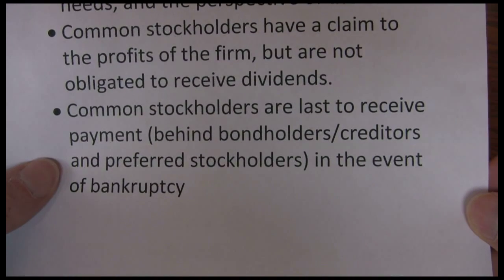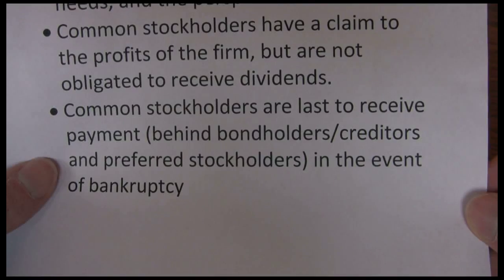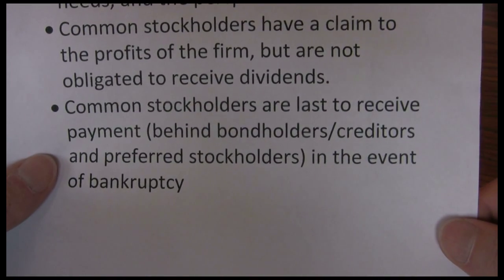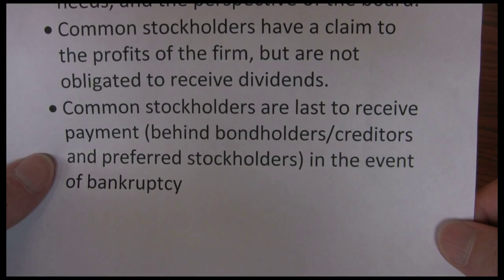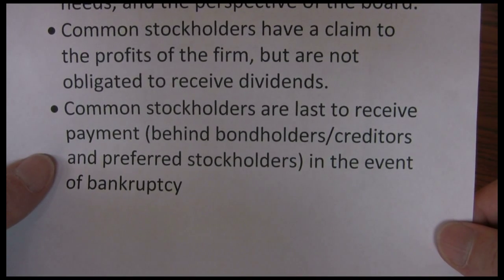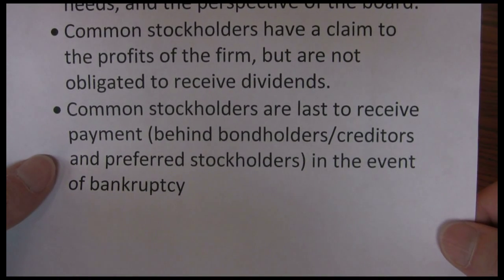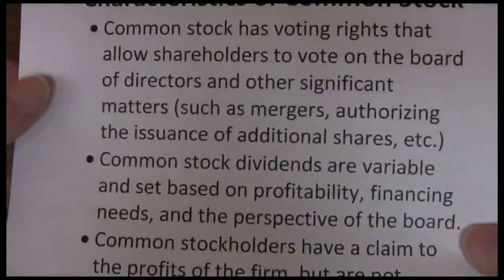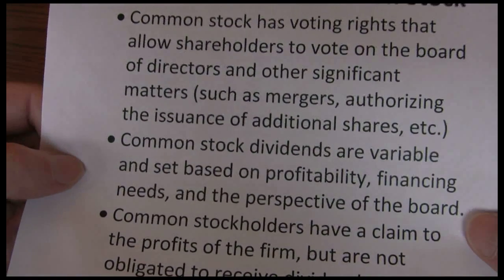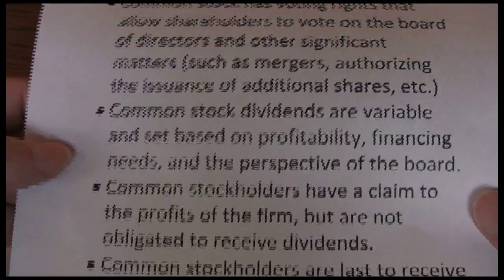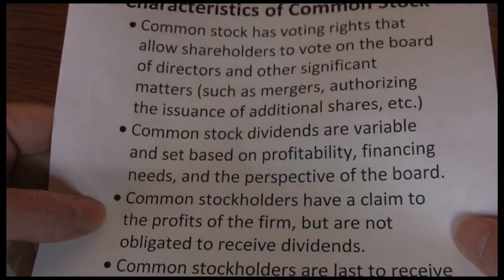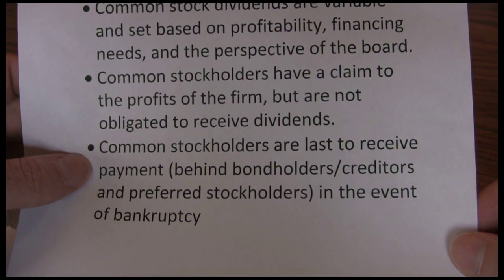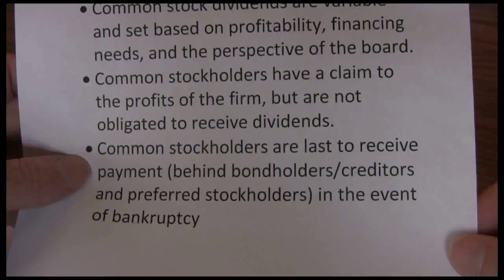Common stockholders are the last to receive payment behind bondholders or other creditors, and preferred stockholders in the event of bankruptcy. If the company goes bankrupt, most likely my stock is going to become worthless — there's typically nothing left over to distribute. It also means my dividends are last in line. So common stock gives me ownership rights, I should receive dividends, but those dividends are variable. Some companies pay dividends; some choose not to and reinvest all that money. That dividend cash flow stream is quite a bit riskier than coupon payments on bonds or preferred dividends, because it's variable in nature and I'm last in line to receive payment.